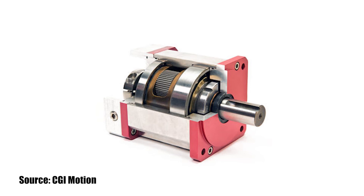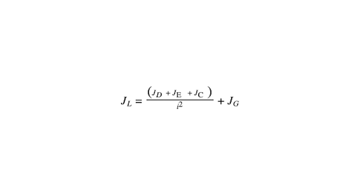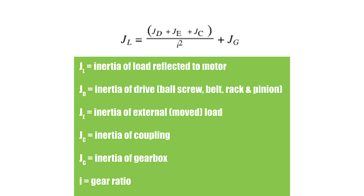For applications with a very high inertia ratio, the load inertia that is seen by, or reflected to, the motor can be decreased by adding a gearbox between the motor and the load. As shown in this equation, adding a gearbox to a motor-driven system reduces the load inertia, J sub L, by the inverse square of the gear ratio, meaning that even a relatively low gear ratio can have a significant effect on the inertia ratio.